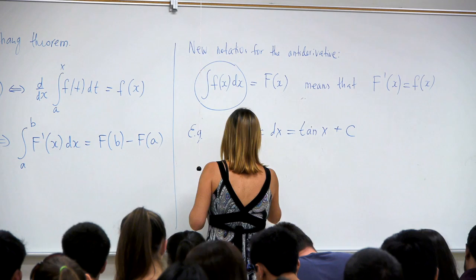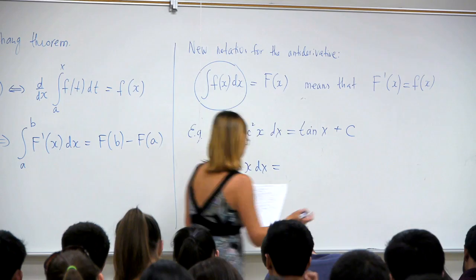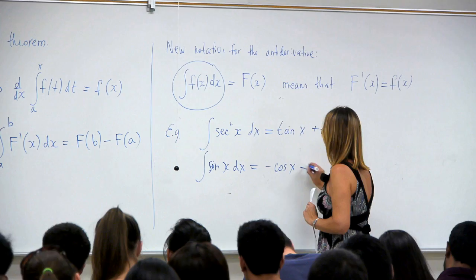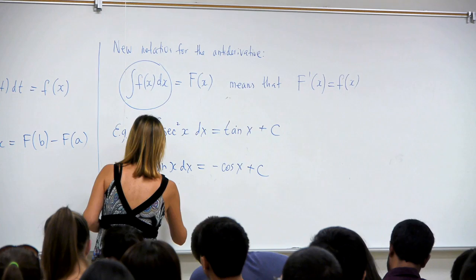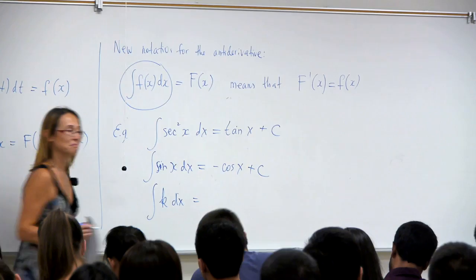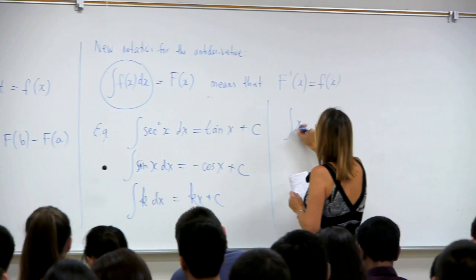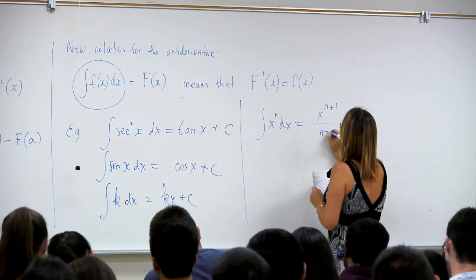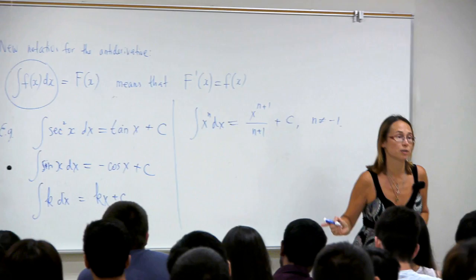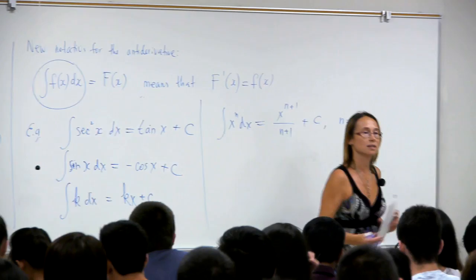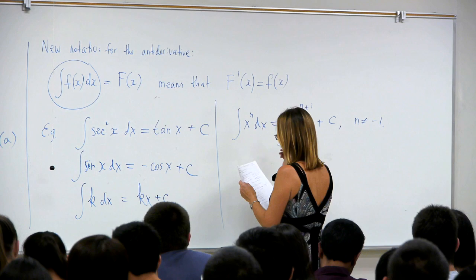Another example: ∫sin(x) dx equals negative cosine plus C. The antiderivative of a constant k is kx plus C. For x to the n, the antiderivative is x^(n+1) over (n+1). We could rewrite the whole table of antiderivatives this way — this is our old table. For instance, ∫dx/(x²+1) is arctan(x), and ∫a^x dx follows a slightly different formula from the natural exponent case.